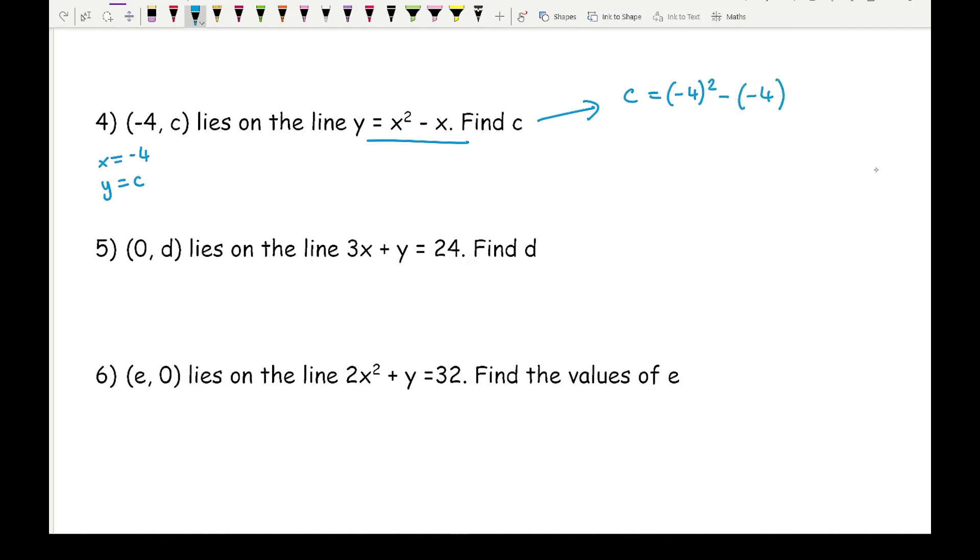Just need to be careful with the negatives. As you can see, where I've got an x, I've replaced it with minus 4 and I've put the minus 4 in brackets. So minus 4 squared is positive 16, and minus minus 4 is positive 4. So here I've got c equals 16 plus 4, so c equals 20. And as the coordinate, it will be (-4, 20).